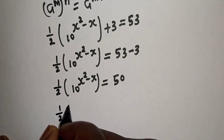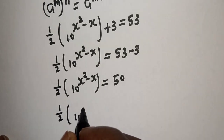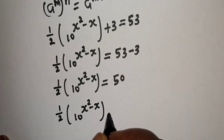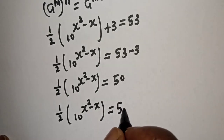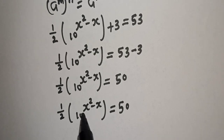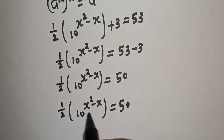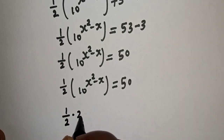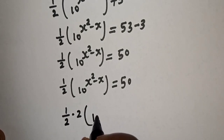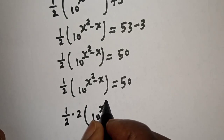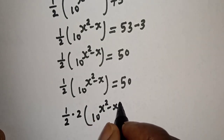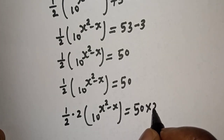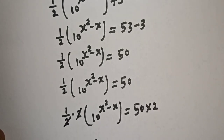So (1/2)(10^(s²−s)) = 50. Now let's multiply both sides of this equation by 2. The 1/2 multiplied by 2 cancels, giving 10^(s²−s) = 100.